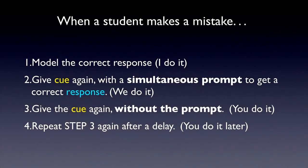Students may make mistakes during the probe session. We recommend that you use the four-step error correction procedure when correcting mistakes. One: model the correct response — I do it. Two: give the cue again with a simultaneous prompt to get a correct response — we do it. Three: give the cue again without the prompt — you do it. And four: repeat step three again after a delay, after giving the student some other questions or another task to do — you do it later.